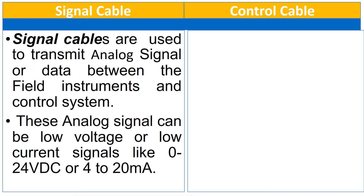First, let us see the applications of both signal cables and control cables. The signal cables are used to transmit the analog signal or data between the field instrument and control system. These analog signals can be low voltage or low current signals like 4 to 20 mA or 0 to 24 V DC.